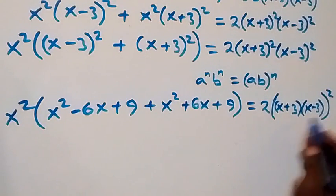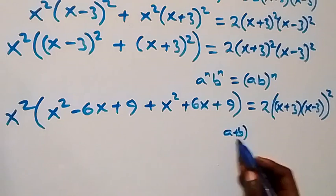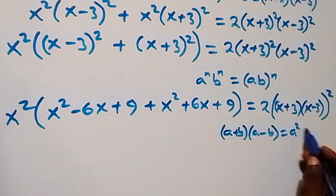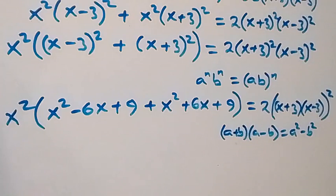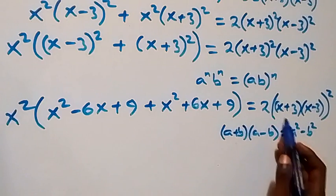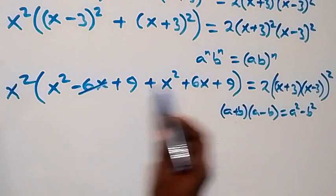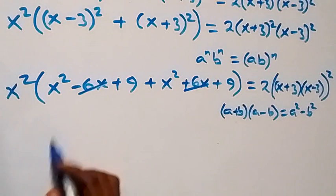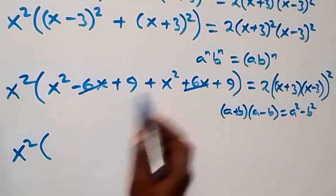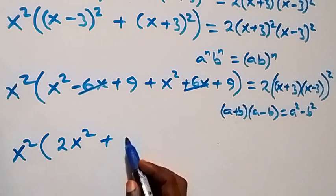Using the identity (a+b)(a-b) = a²-b², we rewrite (x+3)(x-3) as x²-9. Inside the left bracket, -6x and +6x cancel, leaving x² into bracket [x²+x² = 2x², then 9+9 = 18].